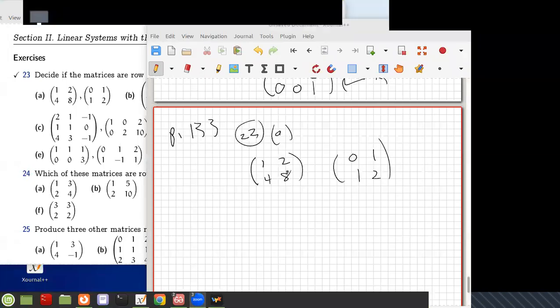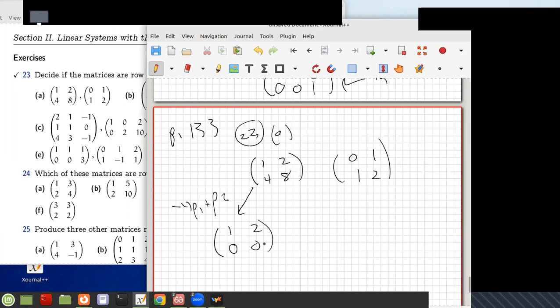Okay, so we can do minus 4 row 1 plus row 2, and we get 1, 2, 0, 0, right?